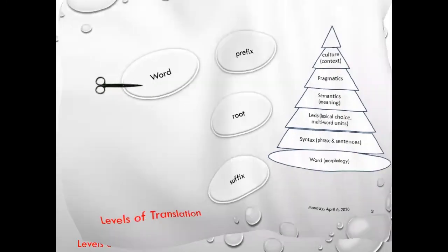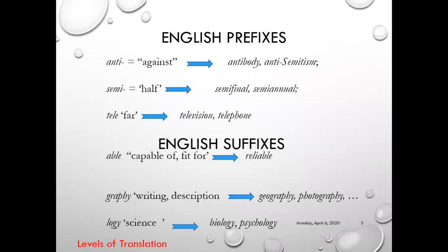For example, we have got a list of English prefixes and suffixes. For example: 'anti,' which means against — antibody; 'semi,' half — semi-final; 'tele,' far — television; 'able,' capable of — reliable; 'graphic,' writing/description — geography, photography; 'logic,' science — biology, psychology.